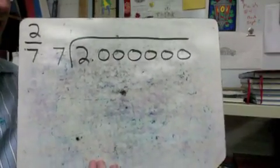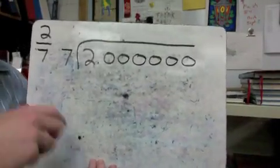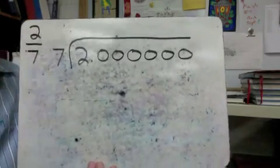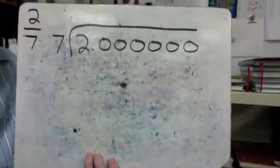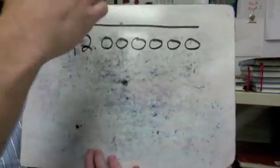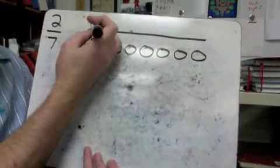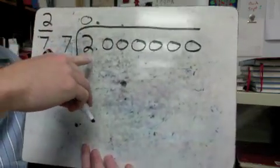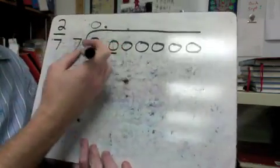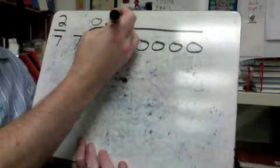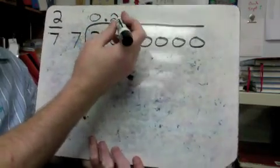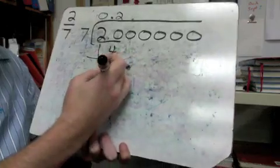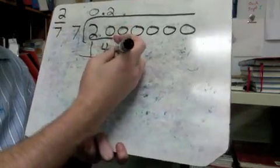2 sevenths as a decimal — same thing here. We know this is going to be less than a whole, so our answer should reflect less than one whole. 7 goes into 2 — it doesn't — so there's our 0 wholes. We bring our decimal point straight up. 7 goes into 20, that would be twice. 2 times 7 is 14, take away equals 6. Bring down my first 0 here.